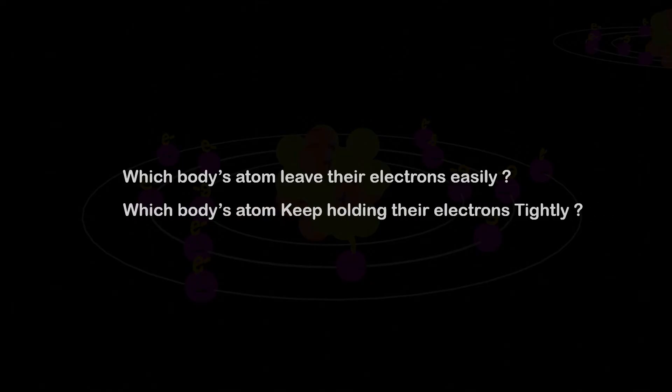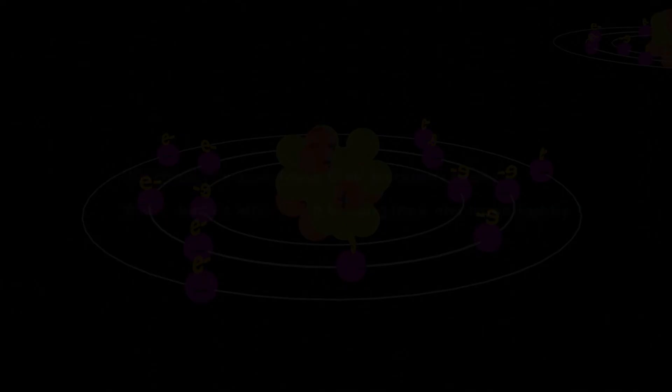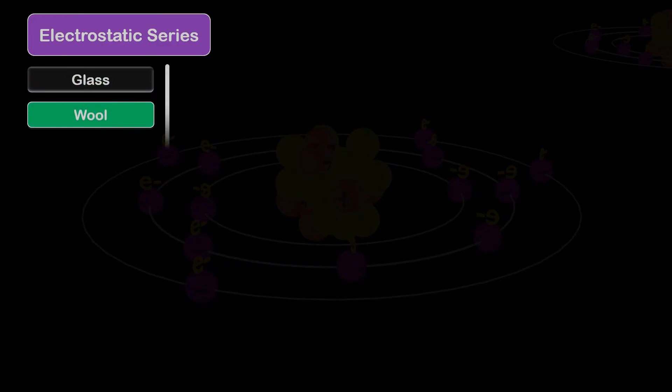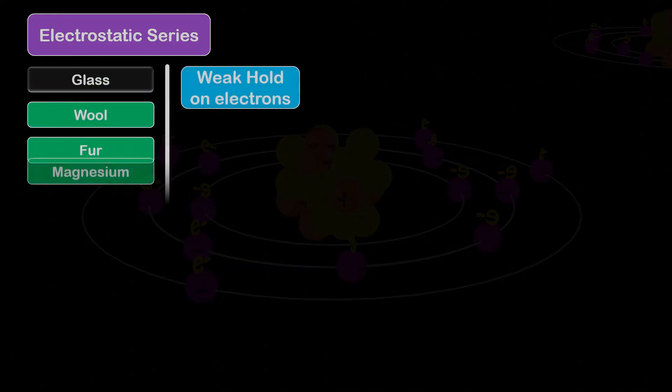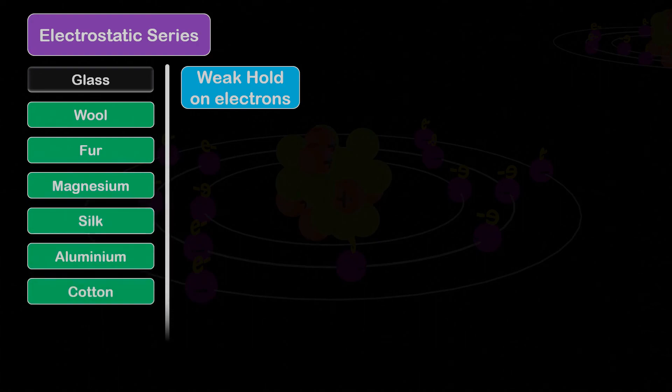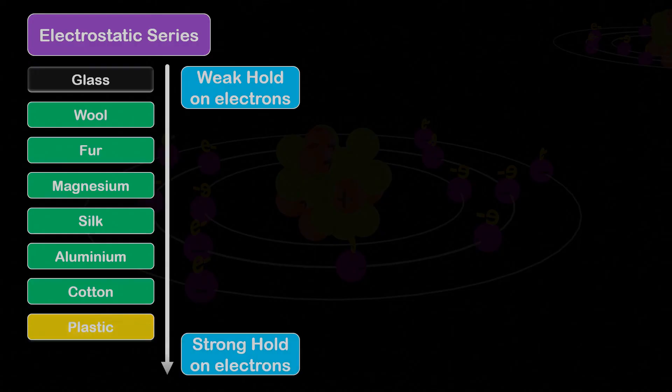To understand this, after a lot of experiments, a series was prepared which was named the electrostatic series. At the top of this series are materials whose atoms give up their electrons easily, and so in increasing order of holding, ending with the material whose atoms tightly hold their electrons.